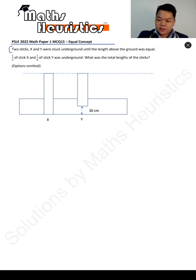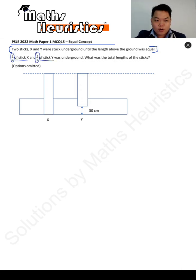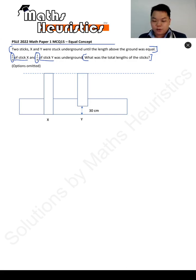Two sticks X and Y were stuck underground until the length above ground was equal. One third of stick X and one eighth of stick Y was underground. The question asks: what was the total length of the sticks? The options have been omitted because the student couldn't recall all the values exactly.